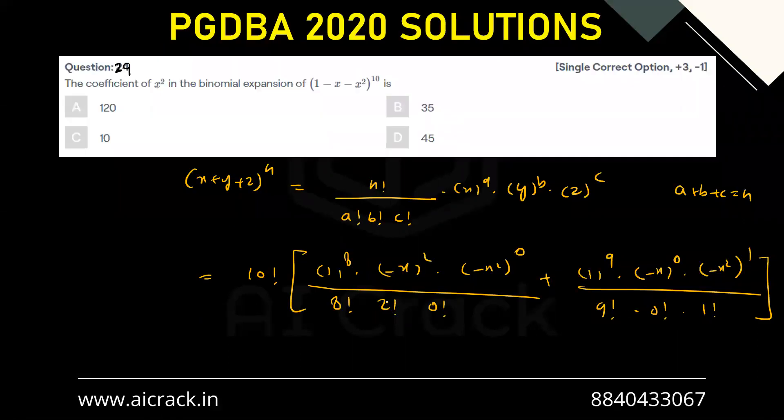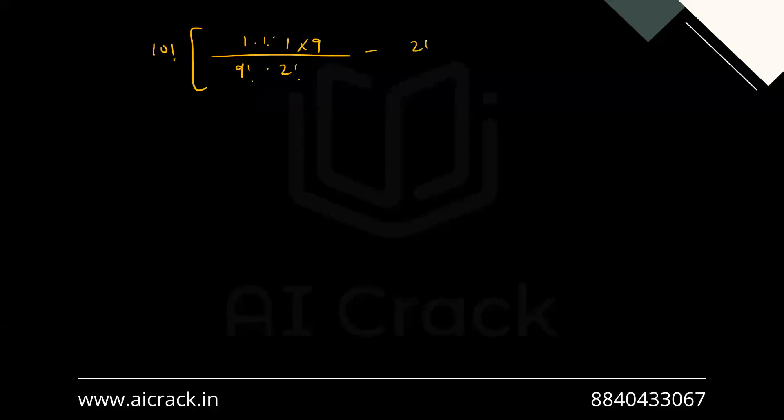So I'll take the LCM. So I'll be getting 2 factorial in the numerator and 9 factorial multiplied by 2 factorial in the denominator. And the remaining part is 1. So this would become 10 factorial. This numerator would become 7 divided by 9 factorial dot 2 factorial. This is 2 factorial. So 10 factorial can be written as 10 dot 9 factorial. This gets canceled out. So it's 5 and this becomes 35.